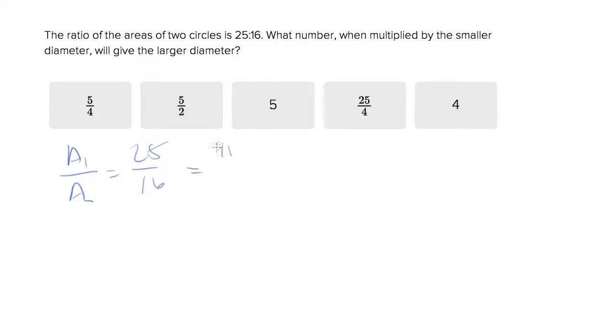Area one is pi r one squared, area two is pi r two squared. So they want to know what number when multiplied by the smaller diameter, which is r two, will give the larger one. So we want to put this in the form r one equals something r two. So they're sort of saying solve for r one.